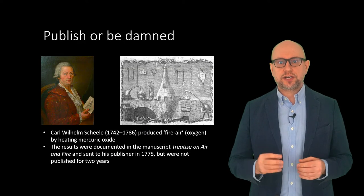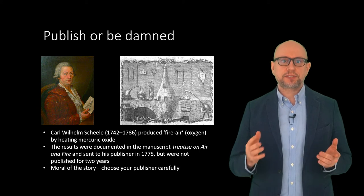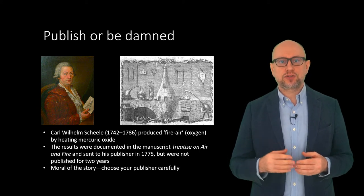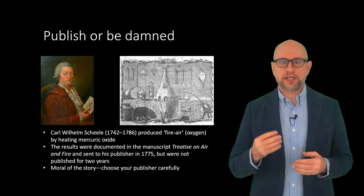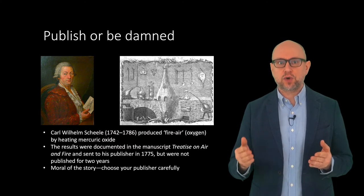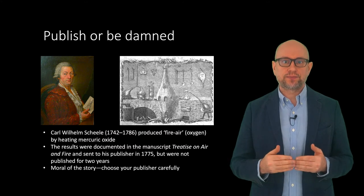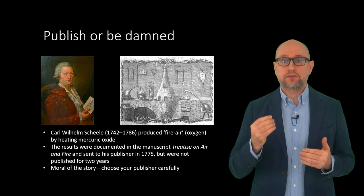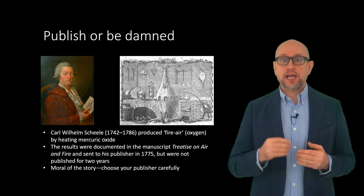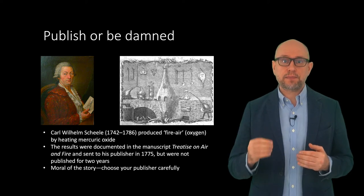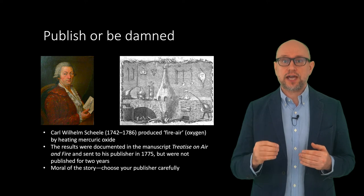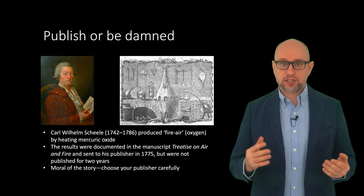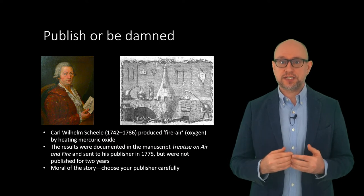A third challenger to the title of discovery of oxygen is perhaps the Swedish pharmacist Carl Wilhelm Scheler. He produced oxygen by heating mercury oxide and various nitrates in experiments between 1771 and 1772. Scheler called this gas fire air. He wrote his account of this discovery in a manuscript titled Treatise on Air and Fire, which he sent to his publisher in 1775. This manuscript was finally published in 1777.